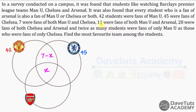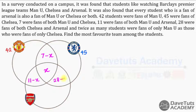11 students were fans of both Man U and Arsenal, so that region is 11 minus X. Then 28 students were fans of both Chelsea and Arsenal, so that region becomes 28 minus X.